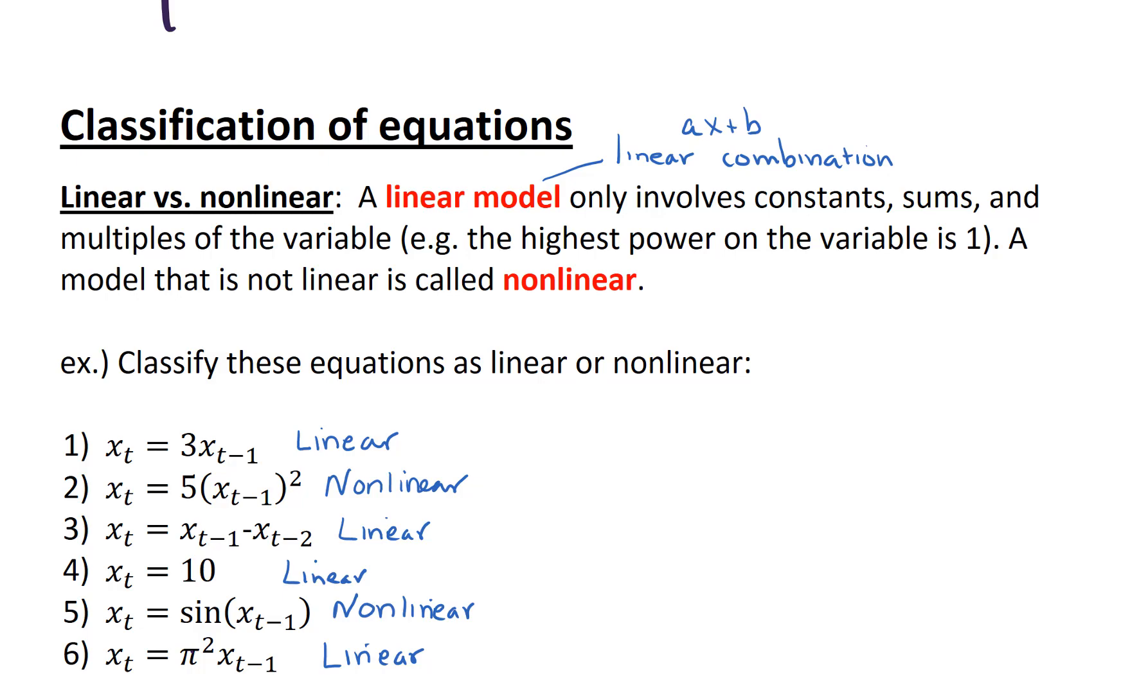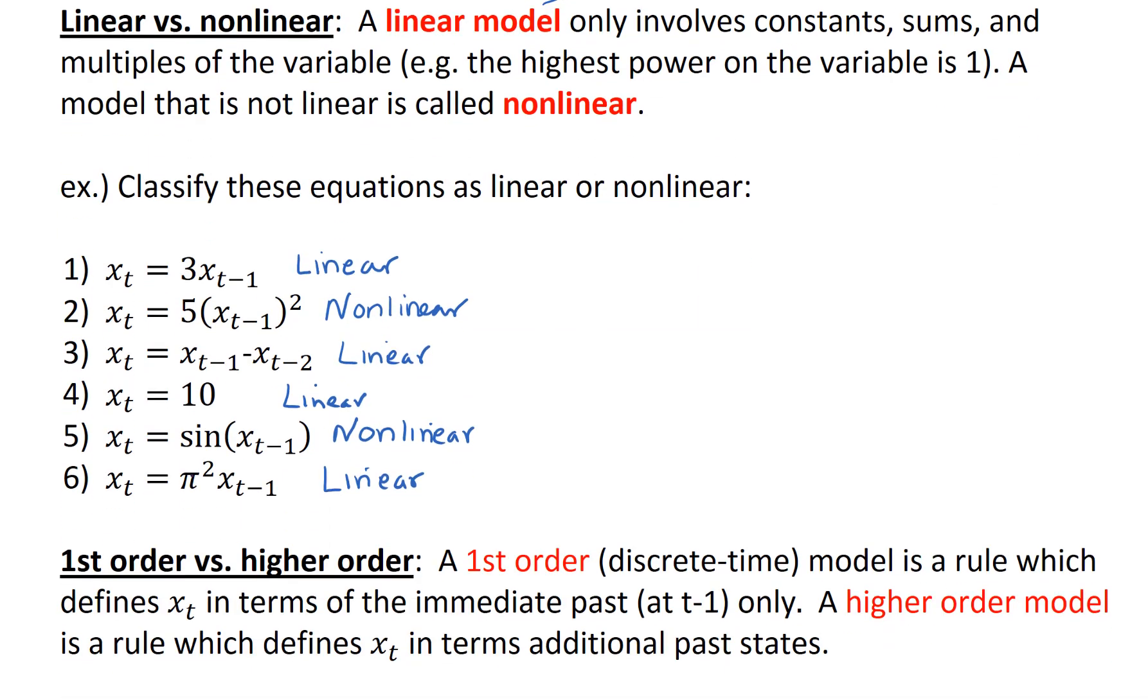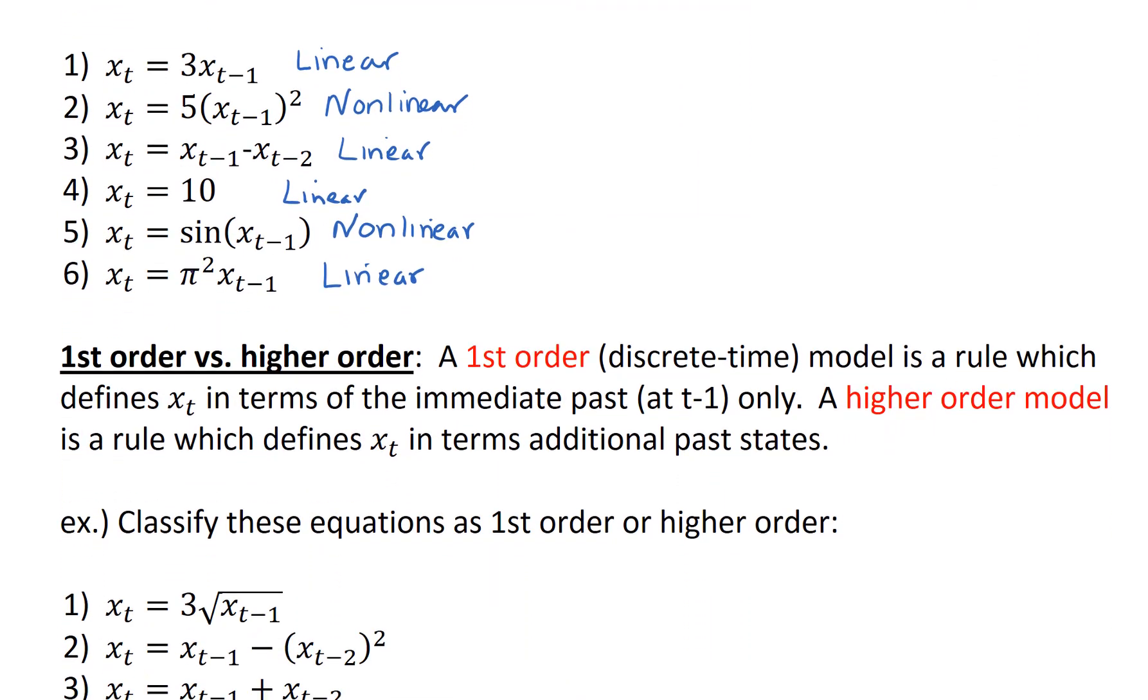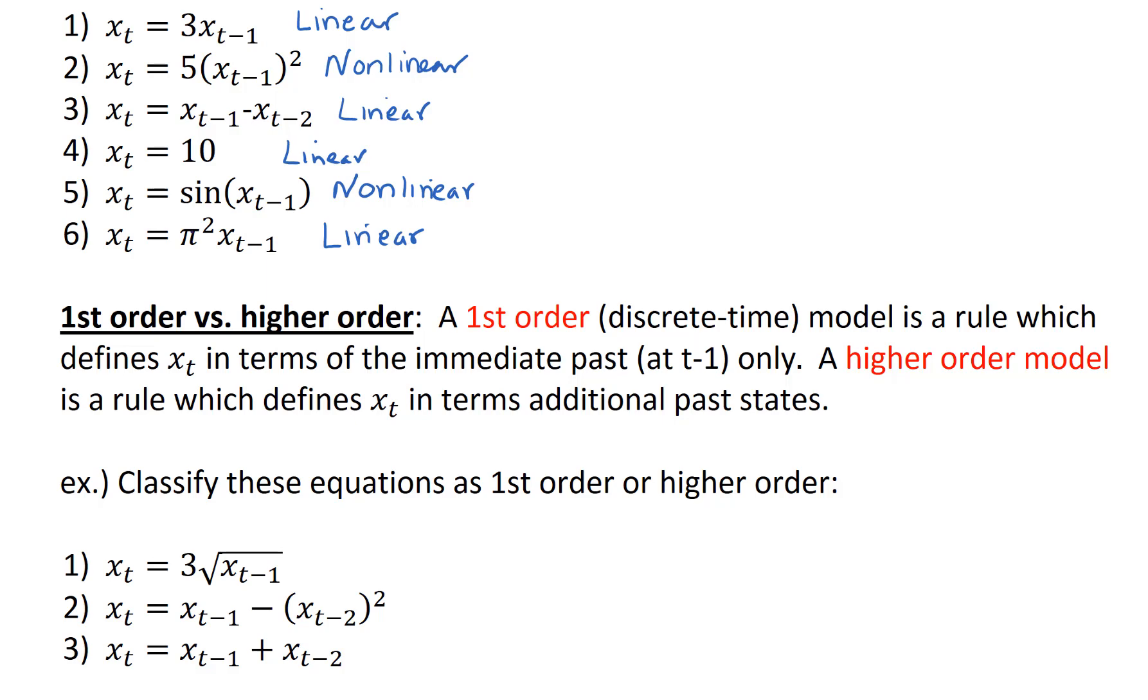Okay, so now let's take a look at another classification. This has to do with first order versus higher order. A first order discrete time model is a rule which defines x sub t in terms of the immediate past, the state at time t minus 1 only. A higher order model is a rule which defines x sub t in terms of additional past states.